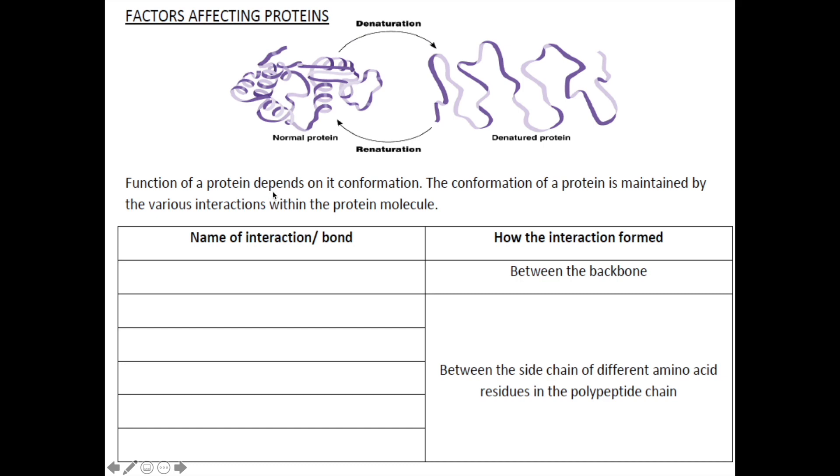Function of protein very much depends on its conformation. For example, look at this protein. It could be an enzyme. An enzyme folded into a particular conformation so that it can form pockets that will act as active sites. And we know that the conformation of protein is maintained by various interactions within the protein molecules, between the backbone that give rise to the secondary level protein structure, alpha helix and beta-pleated sheet, through hydrogen bonding.